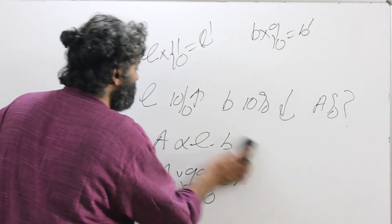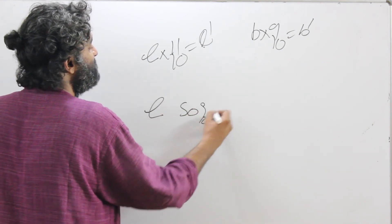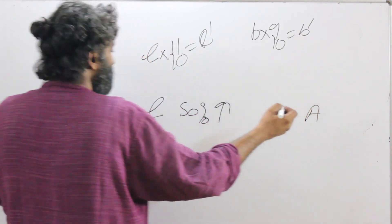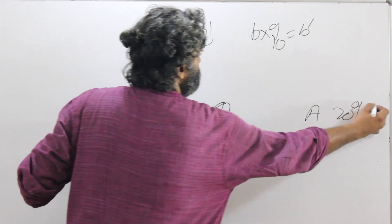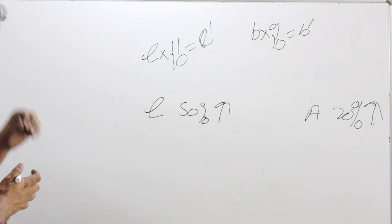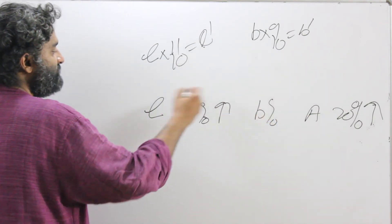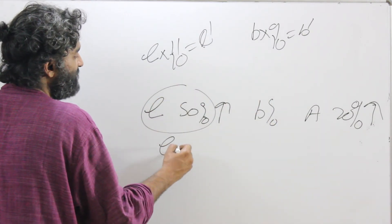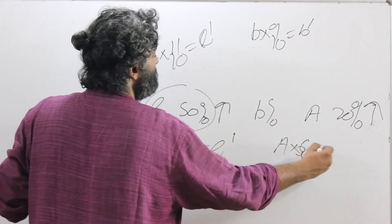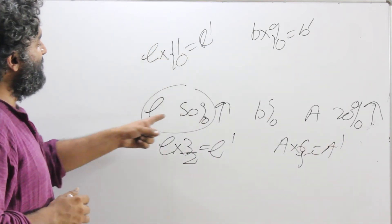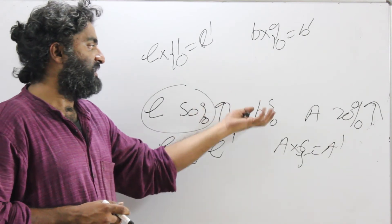Let's twist the problem further. Say the length actually increased by 50% and the area only increased by 20%. What is the percentage change in the breadth? The multiplying factor for length: 50% is 1 by 2, so L into 3 by 2 equals L dash. Area increased by 20%: 20% is 1 by 5, so A into 6 by 5 equals A dash. Since the length increased so much but the area didn't, the breadth must have reduced.